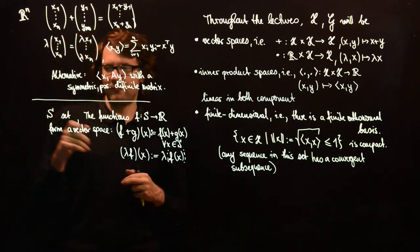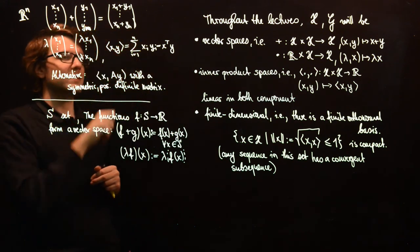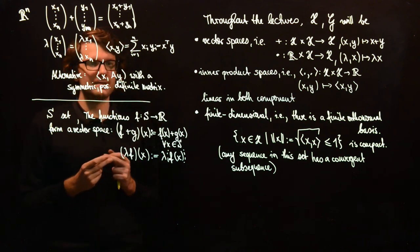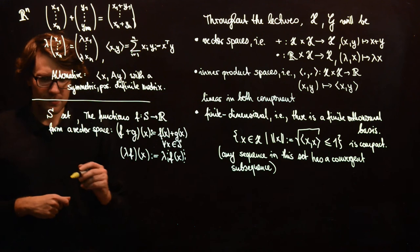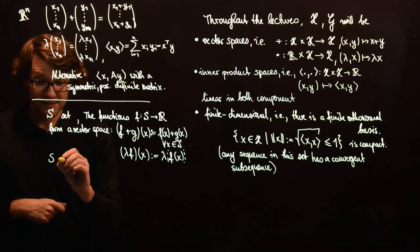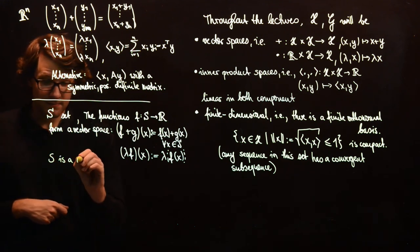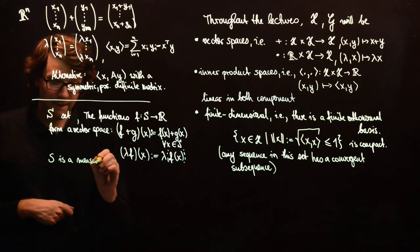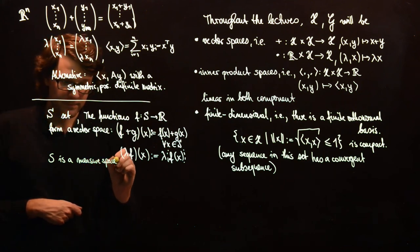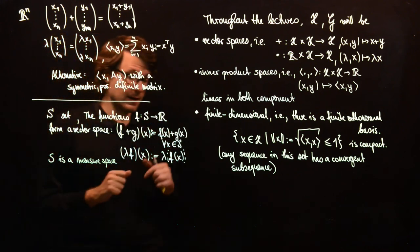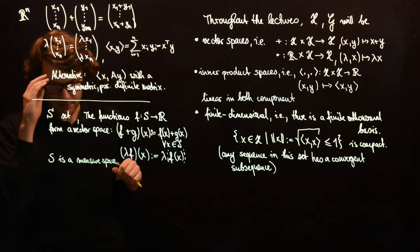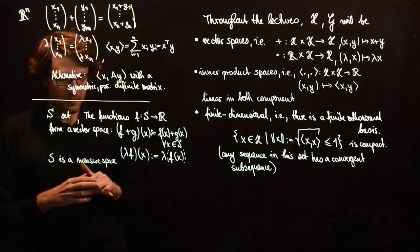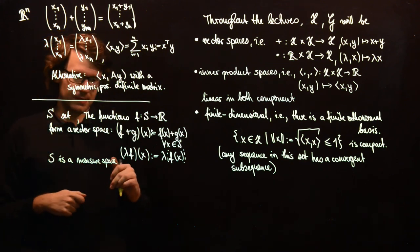The problem is, it's usually for arbitrary sets S not very easy to define an inner product on this. So if S is a measure space, and then you can also take R^n or as we saw take a closed interval, then you can say more.